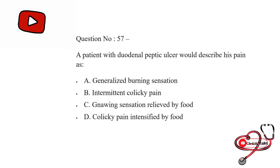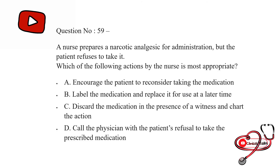A patient with a duodenal peptic ulcer would describe his pain as: option first: generalized burning sensation; second: intermittent colicky pain; third: gnawing sensation relieved by food; last: colicky pain intensified by food. The correct answer is C.